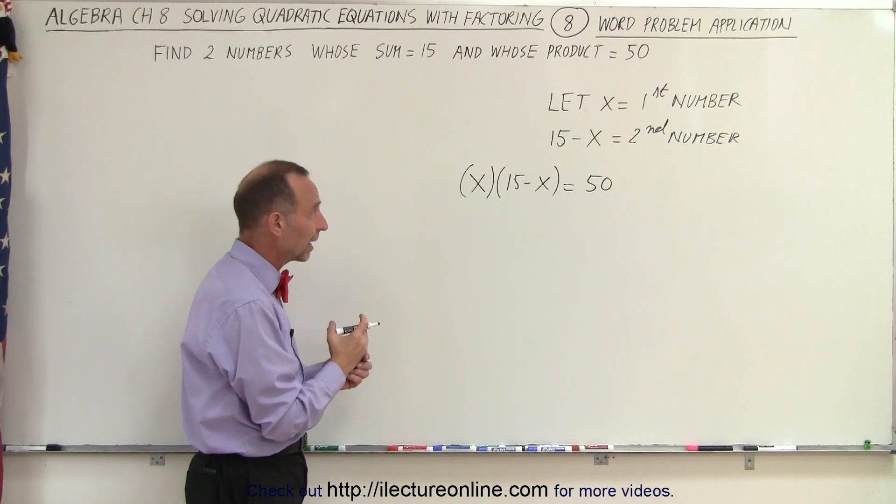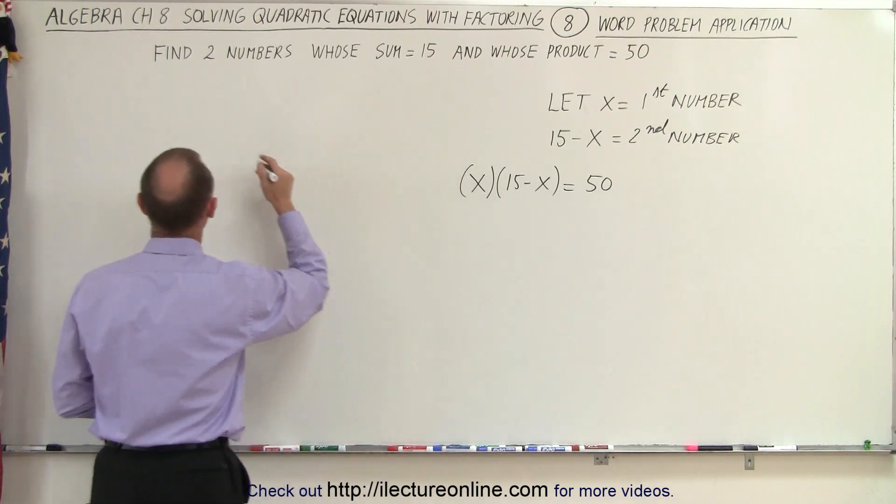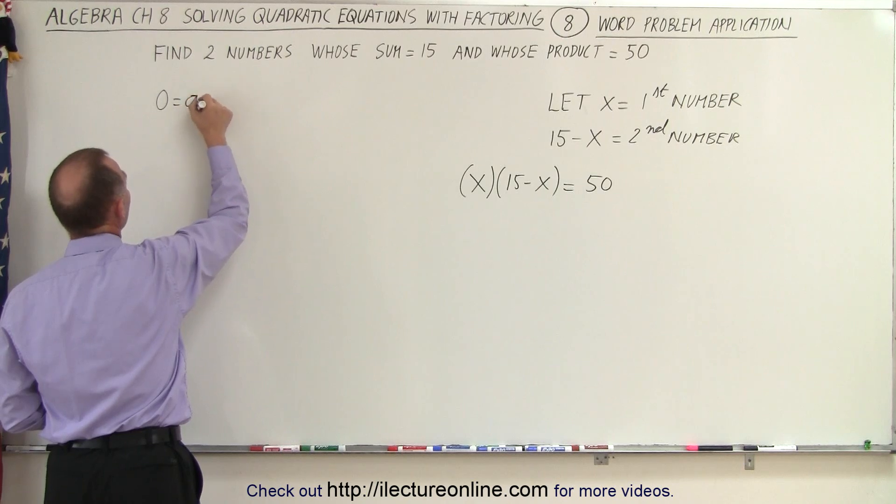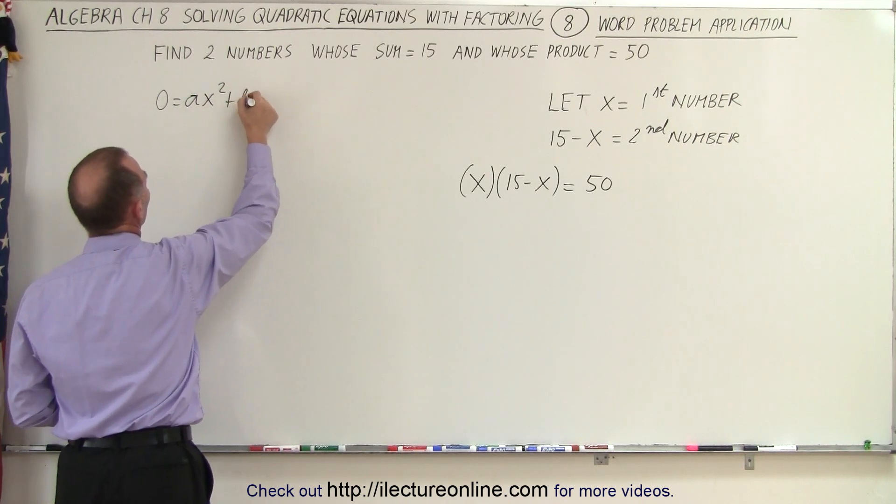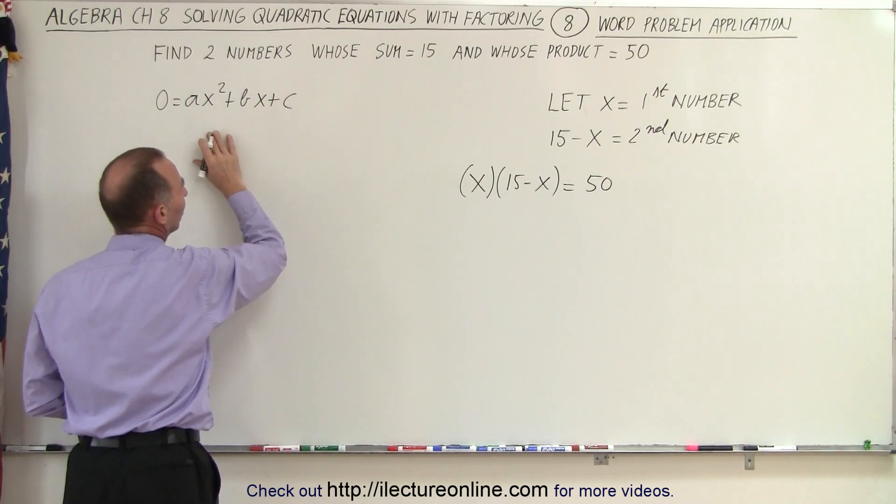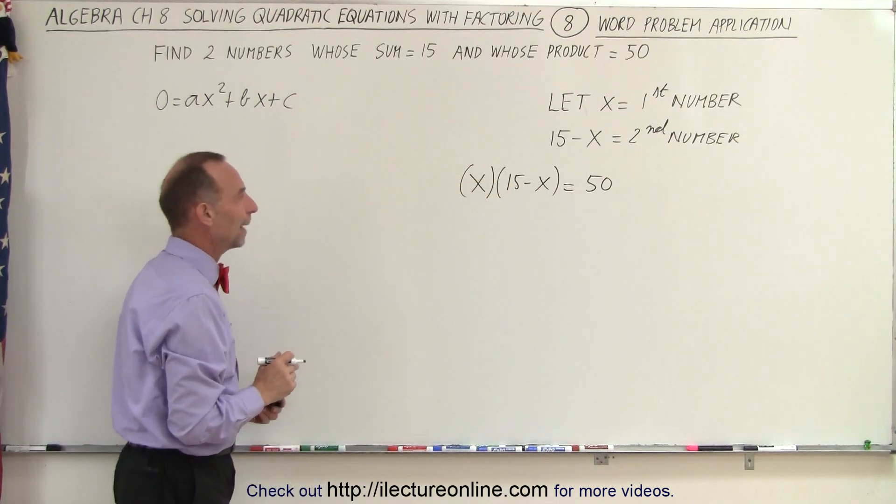Now to make sure, we're going to multiply everything out, put everything on one side, so that we have the general form that 0 equals ax squared plus bx plus c. So let's see if we can take this and make it look like that.